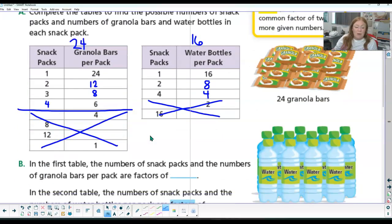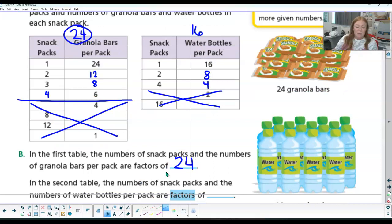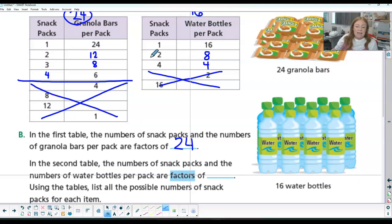So now in the table, the number of snack packs and the number of granola bars per pack are factors of 24. All of those things multiply up to 24. And in the second table, these are factors. Remember factors are fewer. 4 times 6 is the product of 24. These are the factors. This was the answer. So these are factors of 16.